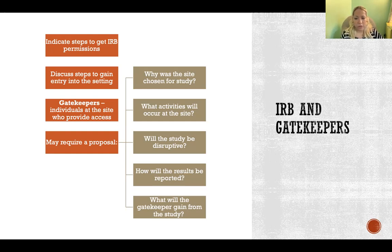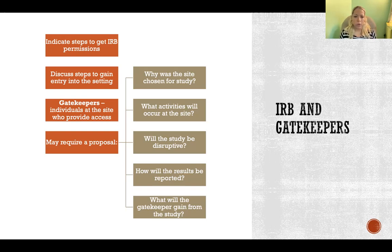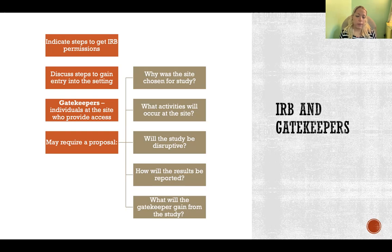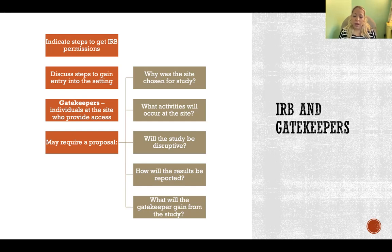You want to discuss the steps for gaining entry into the setting. If you want to conduct a study at a school or hospital, there may be gatekeepers — people who grant or deny you access. You need a plan for who those gatekeepers are, how you're going to approach them, and whether you've already been granted access. When approaching gatekeepers, you'll likely need to provide a proposal giving them information about the study you plan to conduct, why you're choosing that site, and what you plan to do with the participants that organization is protecting.